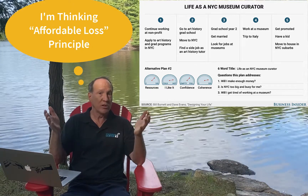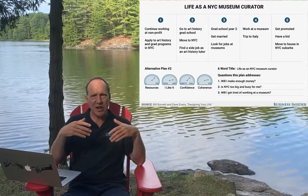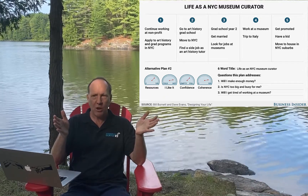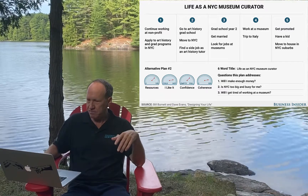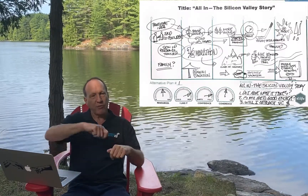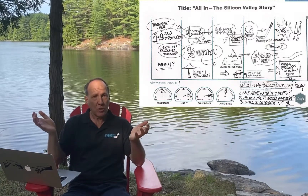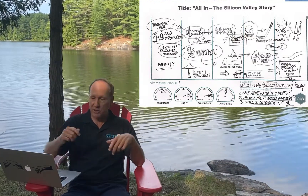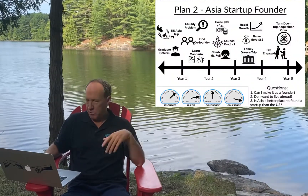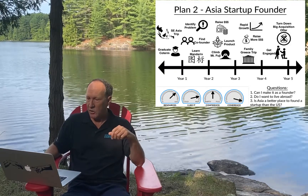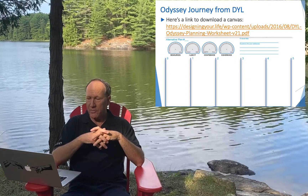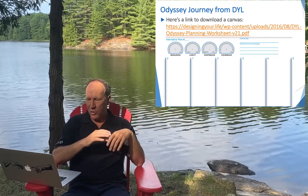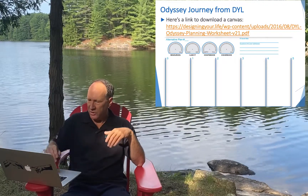Maybe instead of going to law school, maybe he could become a paralegal or something like that. The idea is not to judge any of these plans in this phase — you're just doing divergent thinking. Later on you'll test and maybe interview more people around what that kind of life might look like in the convergent thinking phase. Here's an example of using freehand drawing to do your Odyssey Journey — drawing helps stimulate your creative juices. You can download one of these templates from the designingyour.life website, which gives you the five-year plan as well as dials around whether you like it, what resources you have to access it, and things like that.